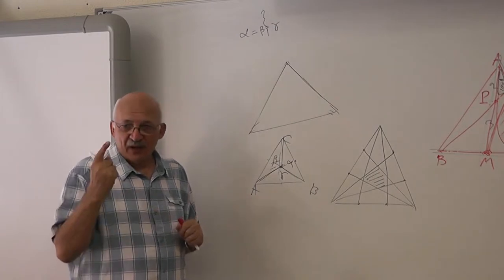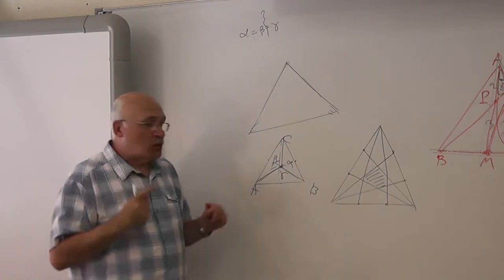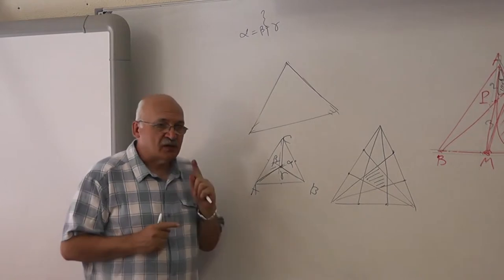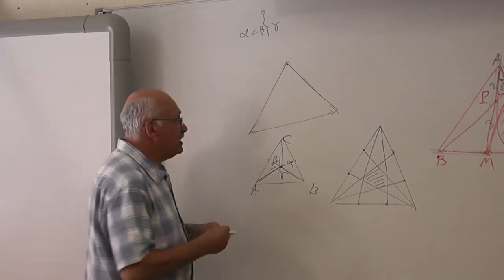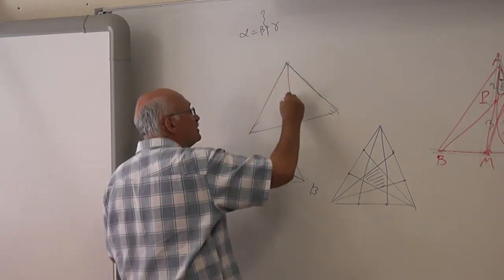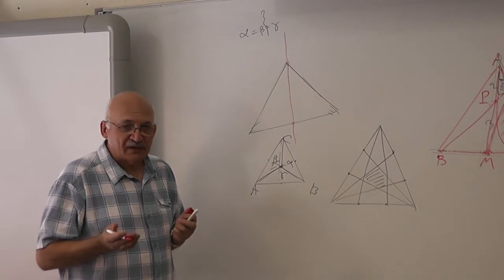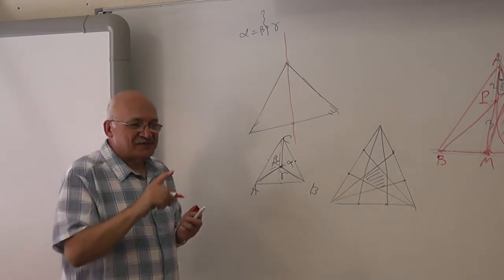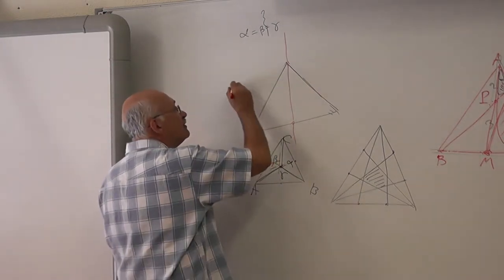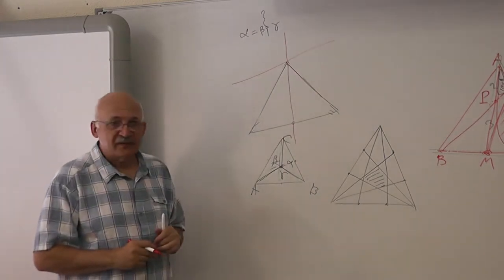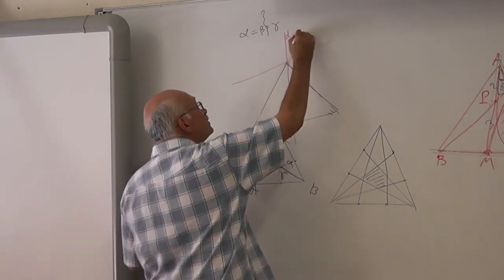Remember our first problem. For what points are these two areas equal? It comes from the line which includes the median — the median and the line, the extension of the median, and the line parallel to it. So this is the set of points for which alpha is equal to beta.